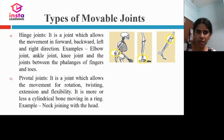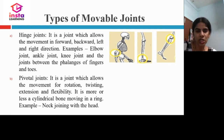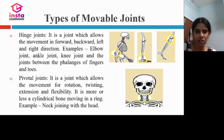The second type is the pivot joint, which allows rotation, twisting, extension, and flexibility. It is more or less a cylindrical bone moving in a ring. The part of the body capable of these movements is the neck joining with the head — you can turn, rotate, extend, and flex it.